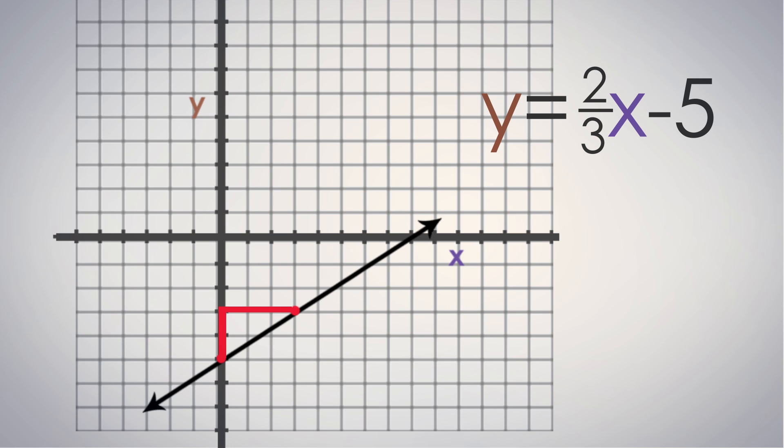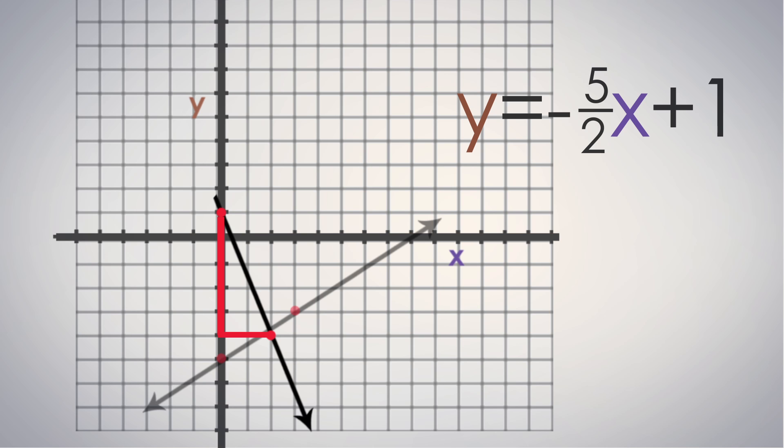Let's look at one more example. Take y equals negative 5 halves x plus 1. Again, you're going to start by graphing the y-intercept, the plus 1. From there, we're going to move the way our slope is telling us to move. That's down 5 and over 2. Connect your dots and you're done.